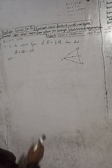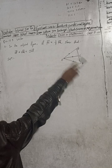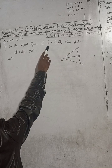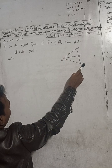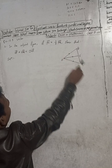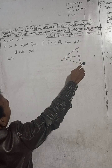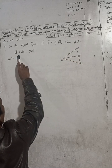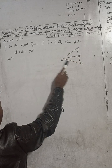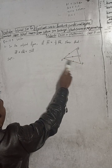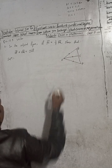Now the question is here. In the adjoining figure, PS vector is equal to half PQ vector. We have to show that OP vector plus OQ vector is equal to 2 OS vector.